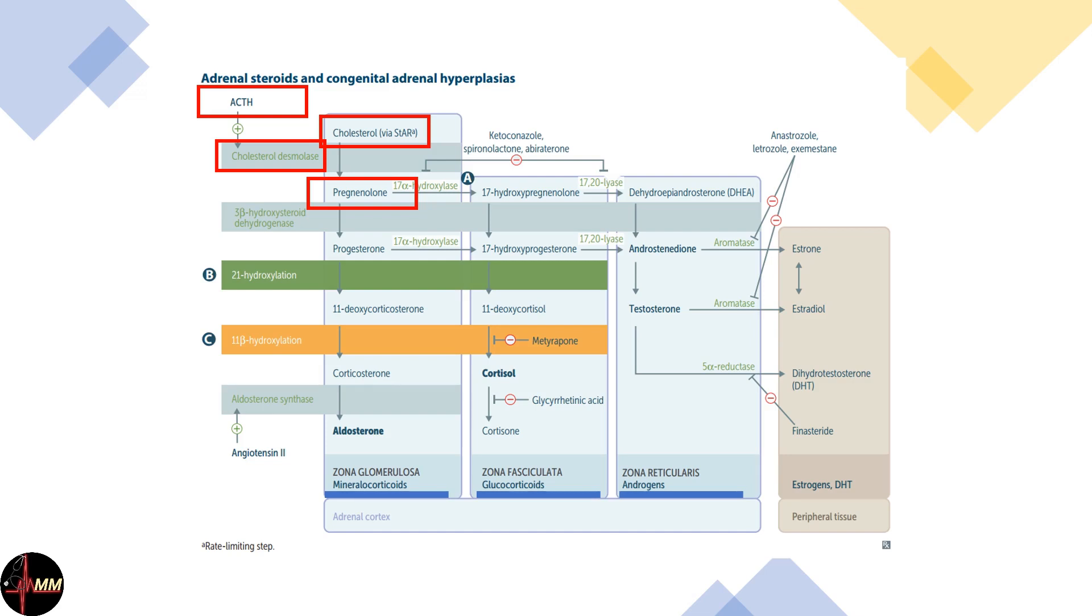In the mineralocorticoid pathway, pregnenolone is converted to progesterone, then to 11-deoxycorticoid via 21-hydroxylase, and finally to aldosterone.